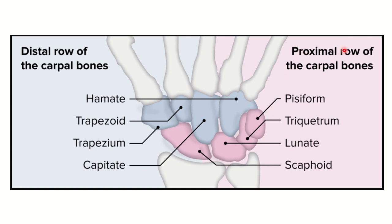In the proximal row of carpal bones, from lateral to medial: scaphoid, lunate, triquetral, and pisiform. In the distal row there are four other carpal bones: trapezium, trapezoid, capitate, and hamate.